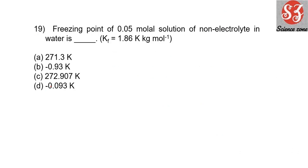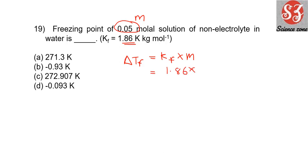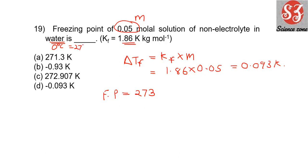Next: 'Freezing point of 0.05 molar solution of non-electrolyte in water is...' Kf is given. Find delta Tf: delta Tf = Kf × M = 1.86 × 0.05 = 0.093 K. Freezing point of pure water is 273 K. So freezing point of solution = 273 − 0.093 = 272.907 K. Answer is option C.